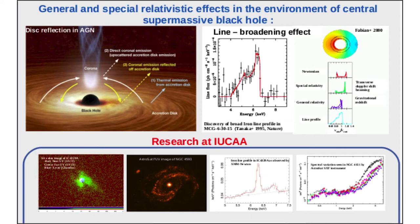Iron line originating near the supermassive black hole is broadened due to the special and general relativistic effects.